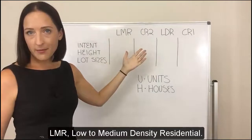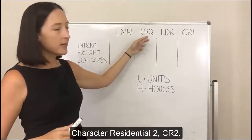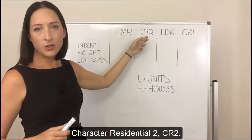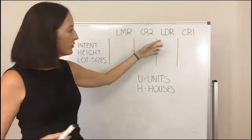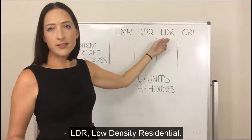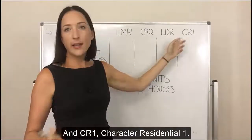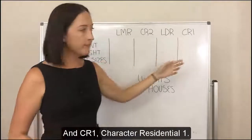LMR — low to medium density residential; character residential 2, CR2; LDR — low density residential; and CR1, character residential 1.